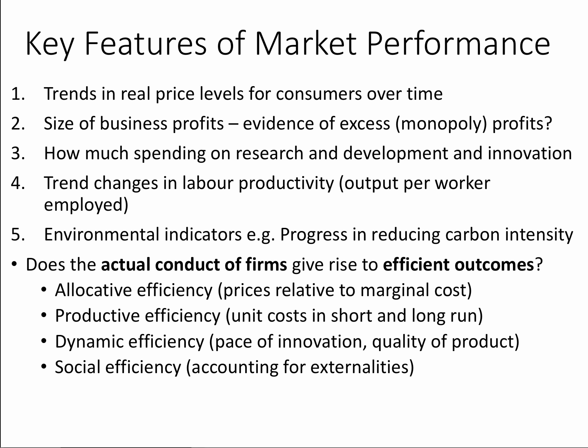The crucial question when thinking about market structures, from an exam point of view, is whether the actual conduct and behaviour of businesses gives rise to efficient outcomes. We can think about four particular types of efficiency: allocative efficiency — prices relative to the marginal cost of supply; productive efficiency — what's happening to the average or unit cost of production in the short and long run; dynamic efficiency — the pace of innovation, quality of product performance, and range of choice; and social efficiency — to what extent the market mechanism is taking into account externality effects.